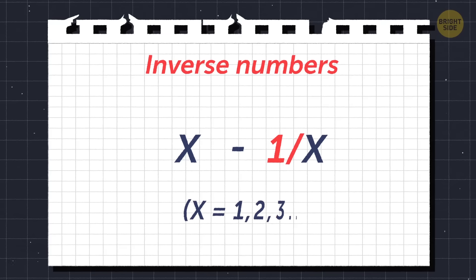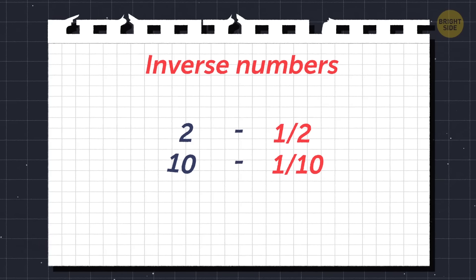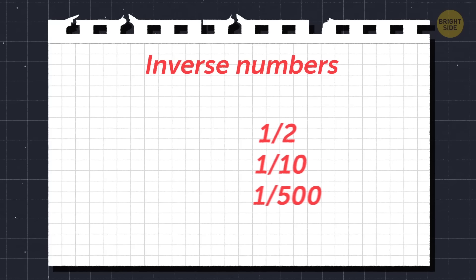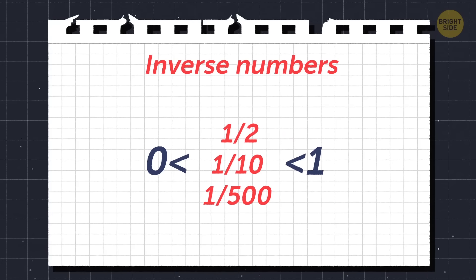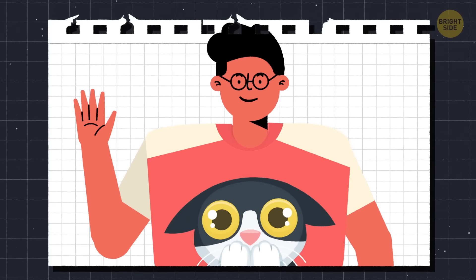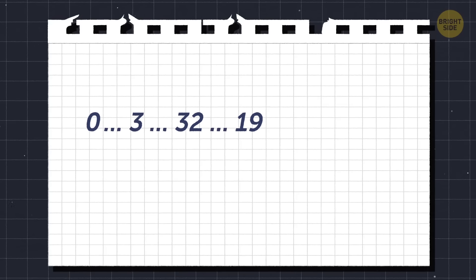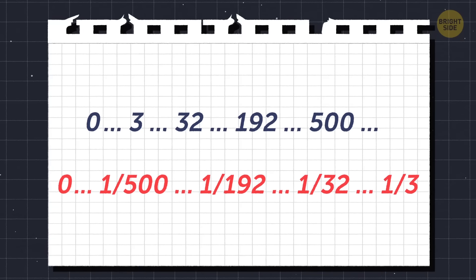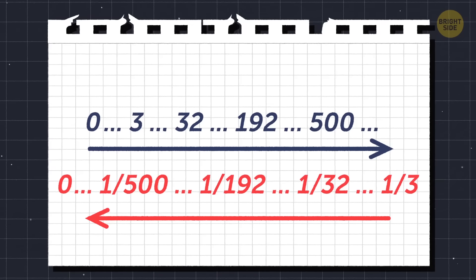In short, we divide the unit by the main number and get its inverse. It doesn't matter what the original number is — two versus one half, ten versus one tenth, five hundred versus one five-hundredth. The inverse will always be closer to zero. It'll never fall below zero, and it won't go above one. As for zero, this inverse number equation will never work with it. The further any number is from zero — three, thirty-two, one ninety-two, five hundred — the closer to zero its inverse gets: one third, one thirty-second, one one-hundred-ninety-second, one five-hundredth. And the closer the inverse number is to zero, the further down that number is from the starting point, zero, on our number line.